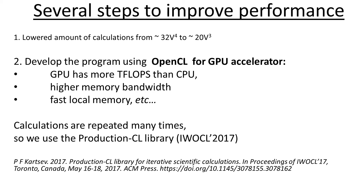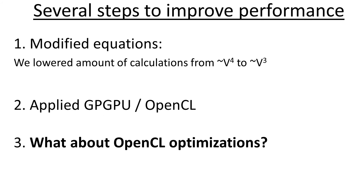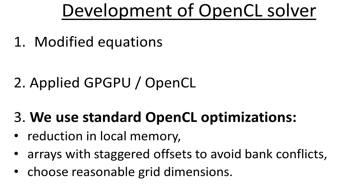What about useful OpenCL optimizations? They are typical: reasonable grid dimensions, reduction in local memory, and large memory arrays have staggered offsets to avoid bank conflicts.